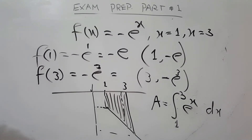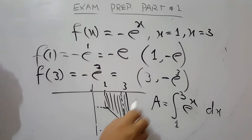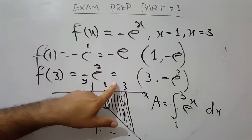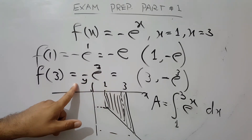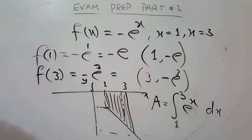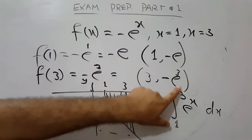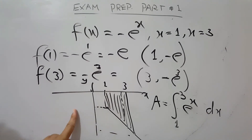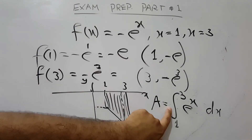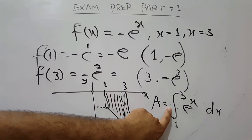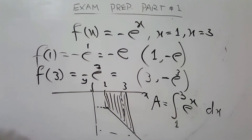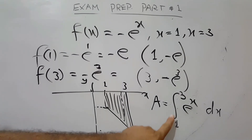If we have two portions — one in the first quadrant and one in the second quadrant — the formula will be the integral from the lower limit of x of f(x) dx. If we have a portion below the x-axis, we multiply the area by negative. The function will multiply the area from negative and then integration is applied.